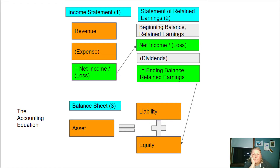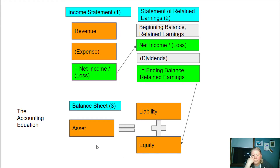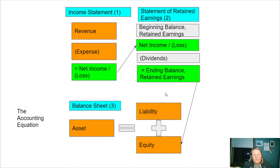All three statements are interrelated. You have to do them in this order: income statement first, then statement of retained earnings, then the balance sheet. This is a simplified version, but if you pull up the statements of any publicly traded company, it will have all three of these statements.